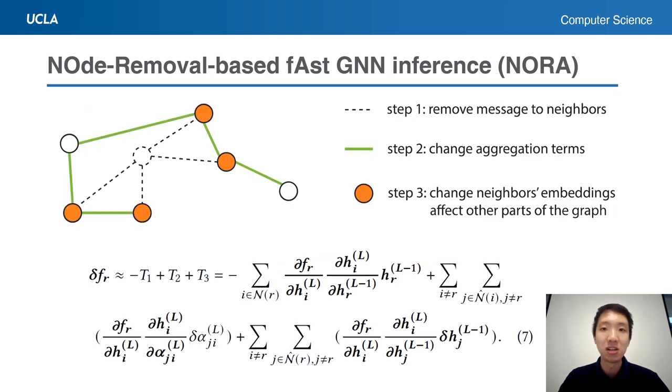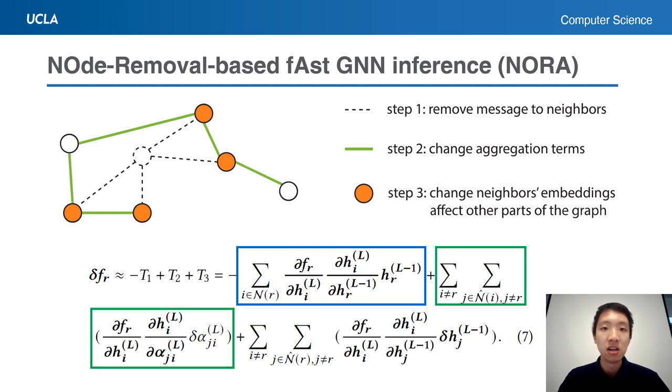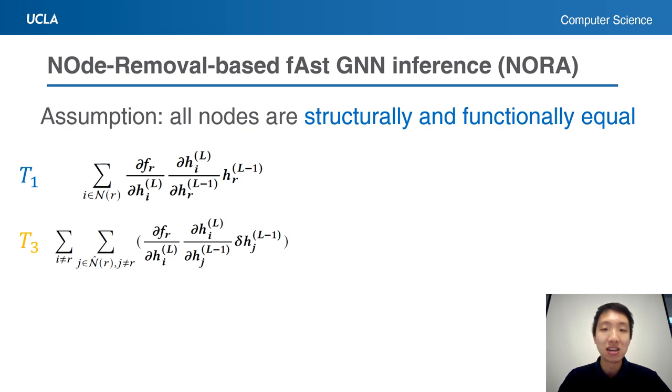The three terms in this formula correspond to the three kinds of influence: the disappearance of the removed node's embedding, the change of its neighbor node's aggregation term, and the spread out influence on multi-hop neighbors.